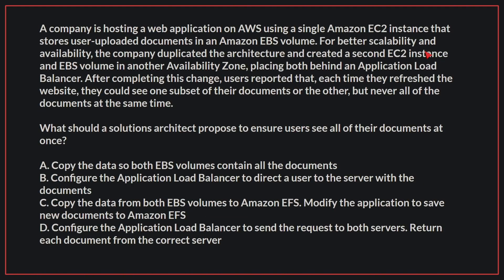A company is hosting a web application on AWS using a single Amazon EC2 instance that stores user-uploaded documents in an Amazon EBS volume. For better scalability and availability, the company duplicated the architecture and created a second EC2 instance and EBS volume in another availability zone, placing both behind an application load balancer. After completing this change, users reported that each time they refresh the website, they could see one subset of their documents or the other, but never all of the documents at the same time. What should a solutions architect propose to ensure users see all of the documents at once?